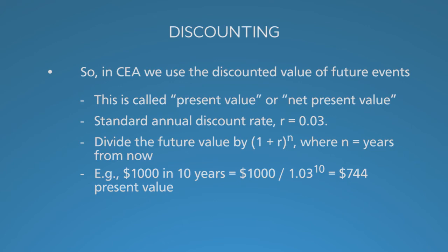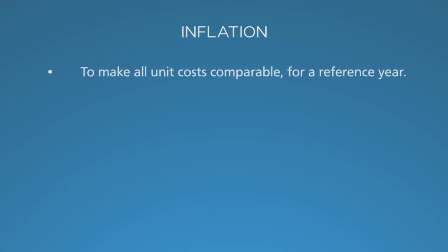In cost-effectiveness analysis, we adjust the value of costs measured in the past to reflect price changes over time. This has nothing to do with time preferences, which drive discounting. It has to do with making all cost input values comparable and consistent. For example, wages tend to rise a few percent per year. Thus, the cost of a nurse in 2003 needs to be inflated to accurately portray 2014 costs.